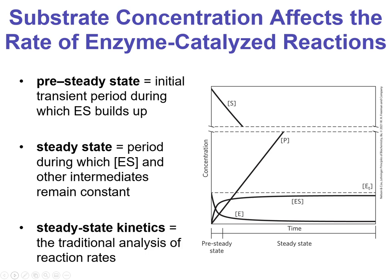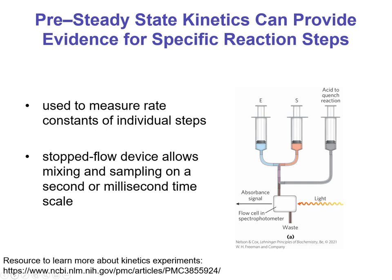I showed you this slide in part one and we talked about steady state. Now we're going to pick up our conversation with pre-steady state, where we're looking at the period where you have the buildup of that enzyme-substrate complex and you can identify the rate-limiting step. Pre-steady state kinetics is pretty powerful — you can look at specific reaction steps, particularly ones that are very very fast, and you can use this to measure the rate constants of individual steps like the chemistry step or some conformational change.